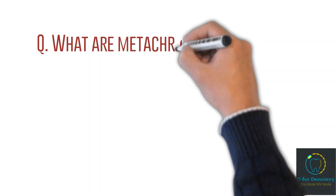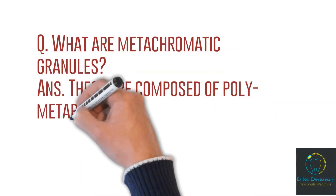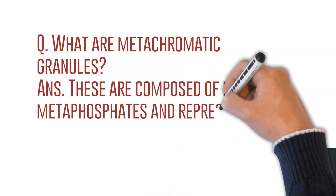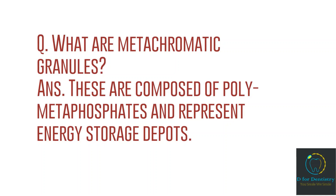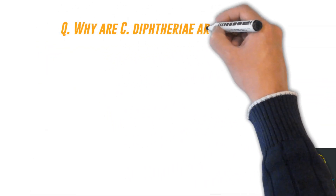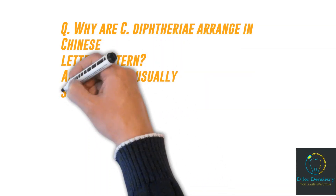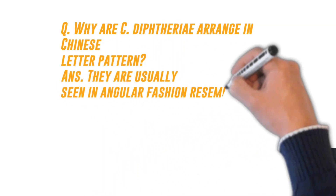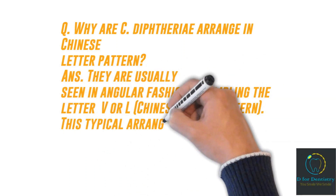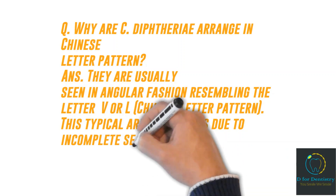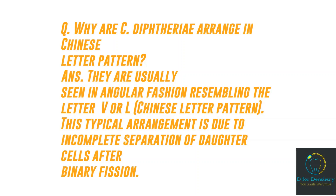Question: What are metachromatic granules? Metachromatic granules are composed of polymetaphosphates and represent energy storage depots. Question: Why are Corynebacterium diphtheriae arranged in a Chinese letter pattern? Answer: They are usually seen in an angular fashion resembling the letter V or L — that is the Chinese letter pattern. This typical arrangement is due to incomplete separation of daughter cells after binary fission.